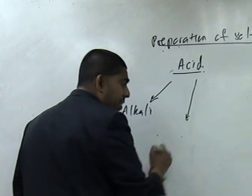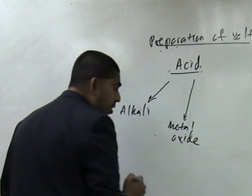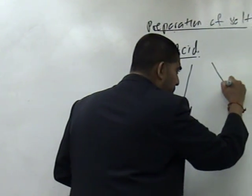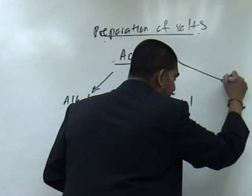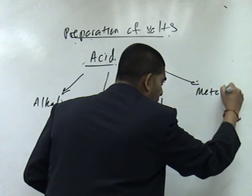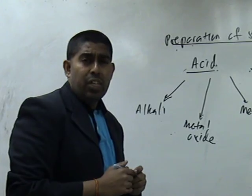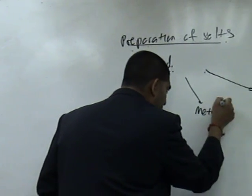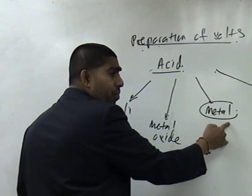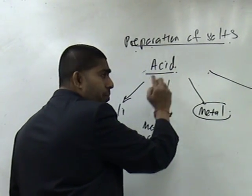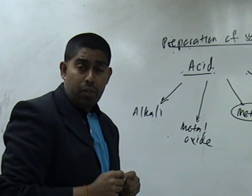Number three, acid plus with metal. Number four, acid plus with metal carbonate. Now students, I would like you to take note that in this process, acid plus metal, the metal must be more reactive than hydrogen in the metal reactivity series. What is metal reactivity series? I hope you know.